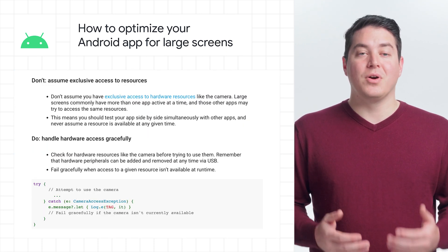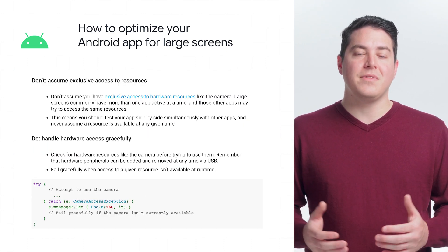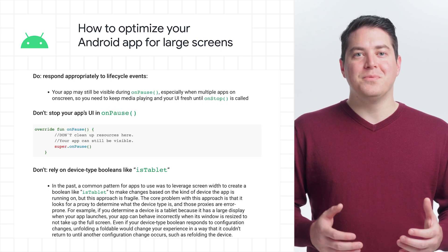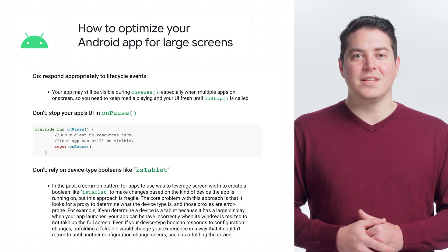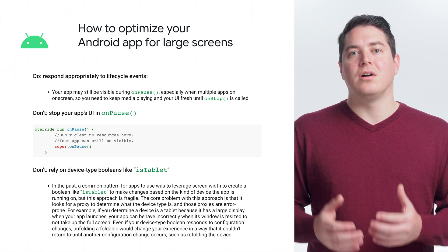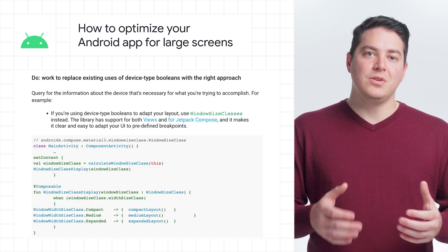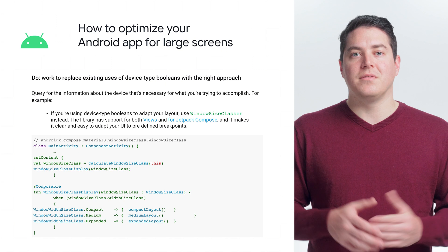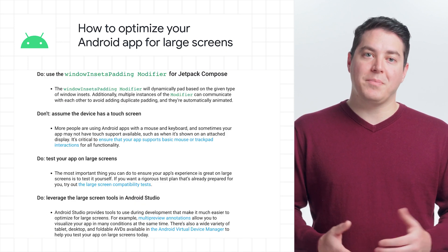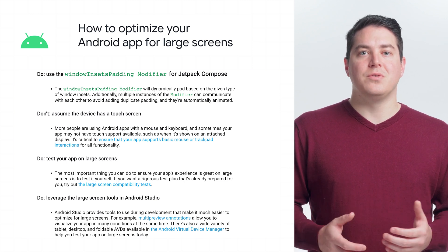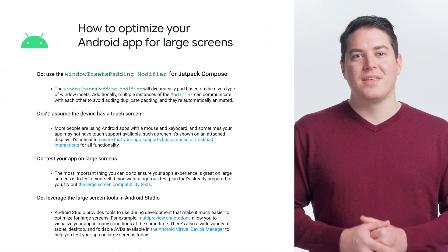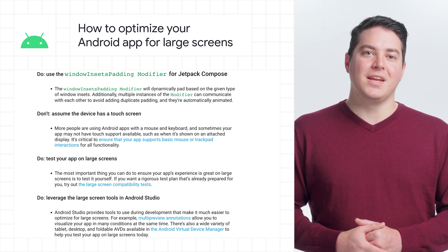Some of the important takeaways from the article are: don't assume exclusive access to resources; do handle hardware access gracefully; do respond appropriately to lifecycle events; don't stop your app's UI on a pause; don't rely on device-type booleans like isTablet; do work to replace existing use of device-type booleans with the right approach; do use the window insets padding modifier for Jetpack Compose; don't assume the device has a touchscreen; do test your app on large screens; and do leverage large screen tools in Android Studio.